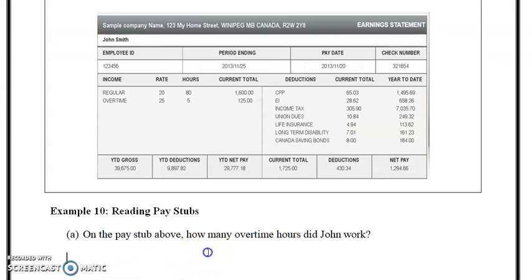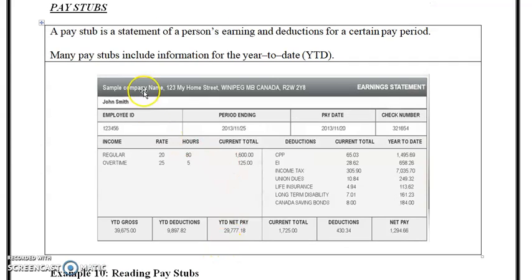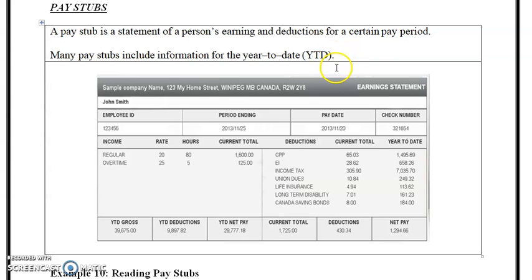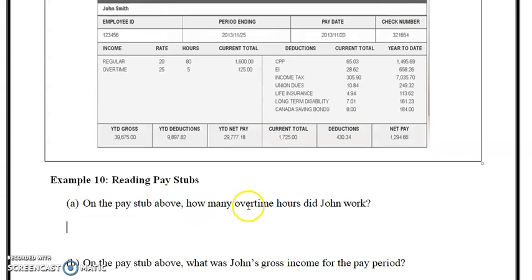It says a pay stub is a statement of a person's earnings and deductions for a certain pay period. Many pay stubs include information from year to date — you see YTD, that's year to date — so from the calendar year beginning in January.